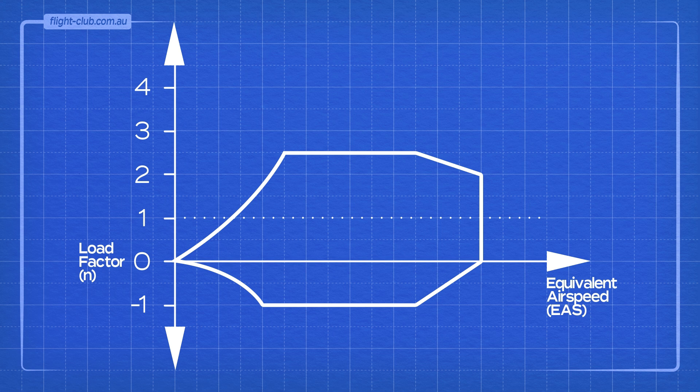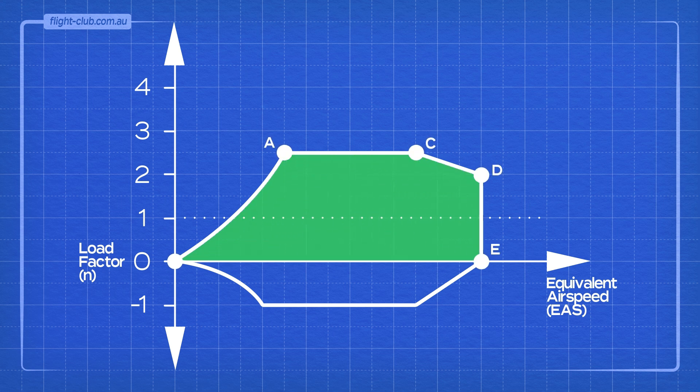The speed and load factor range within the OACDE section of the envelope represents the positive maneuver boundary, also known as the limit positive load factor.